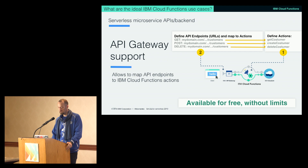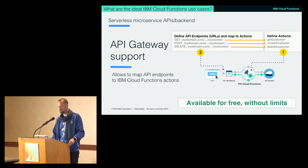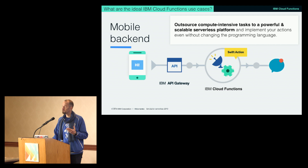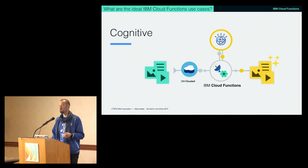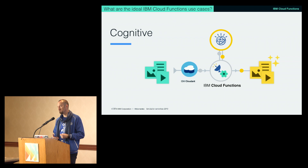Example use cases include pulling or updating data from services through an API Gateway, as shown here. I'm also showing examples where you can build a mobile serverless backend and augment it with Watson services or AI services on the same platform. For instance, you can augment pictures you post with automatic identification or tagging using an AI-based service.